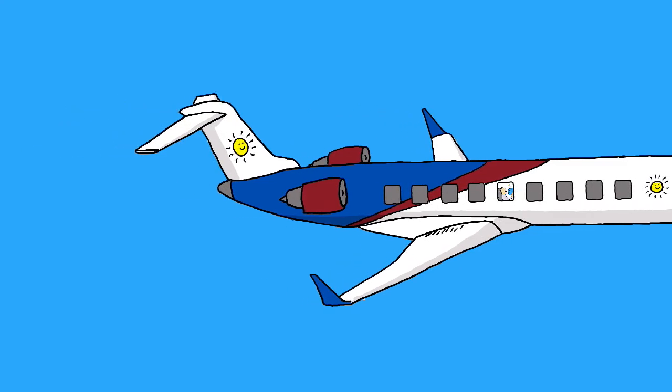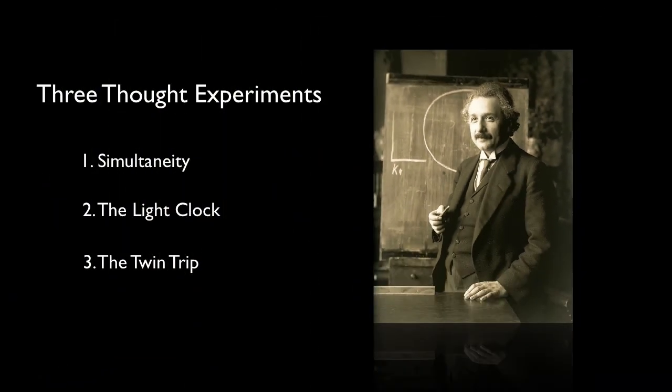As I walk you through these scenarios, through these thought experiments, you'll see that a consequence of the speed of light being constant is that space and time become warped.